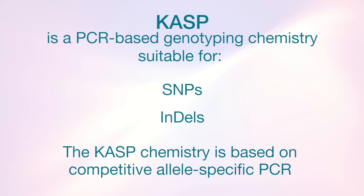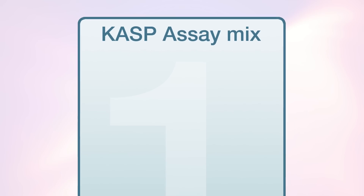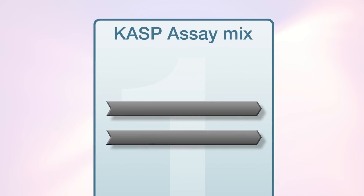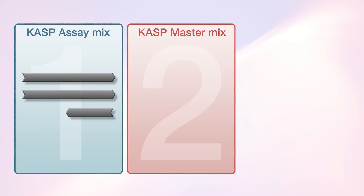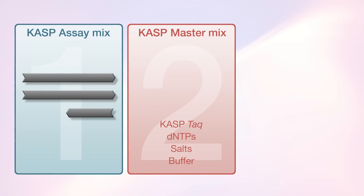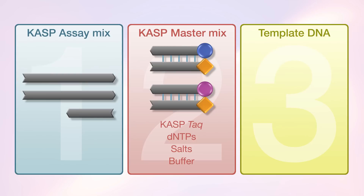There are three components in the CASP reaction. The first is the CASP assay mix, which consists of two allele-specific forward primers and one common reverse primer. The second component is the universal CASP master mix, which contains all other components necessary for the PCR, including two fluorescently labelled reporter cassettes. The third component is template DNA.